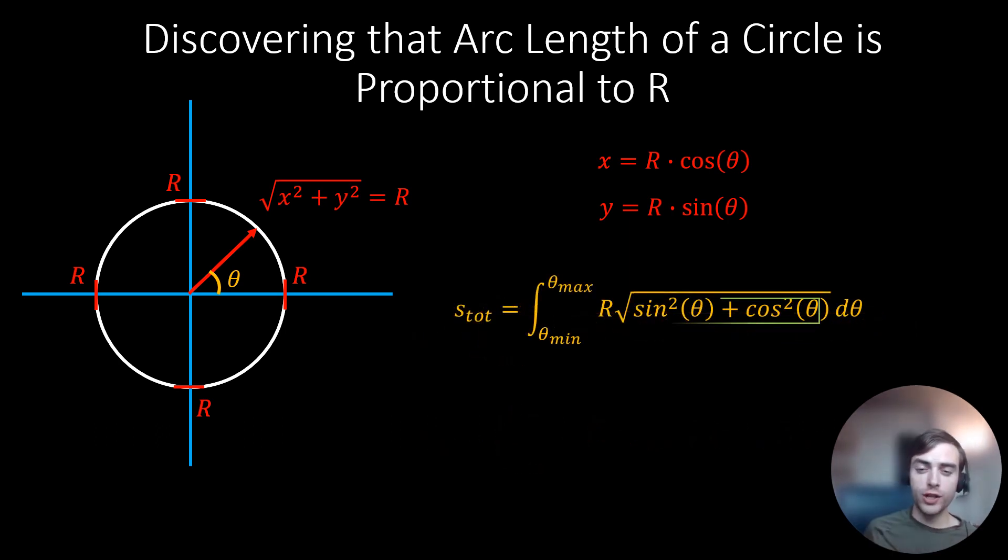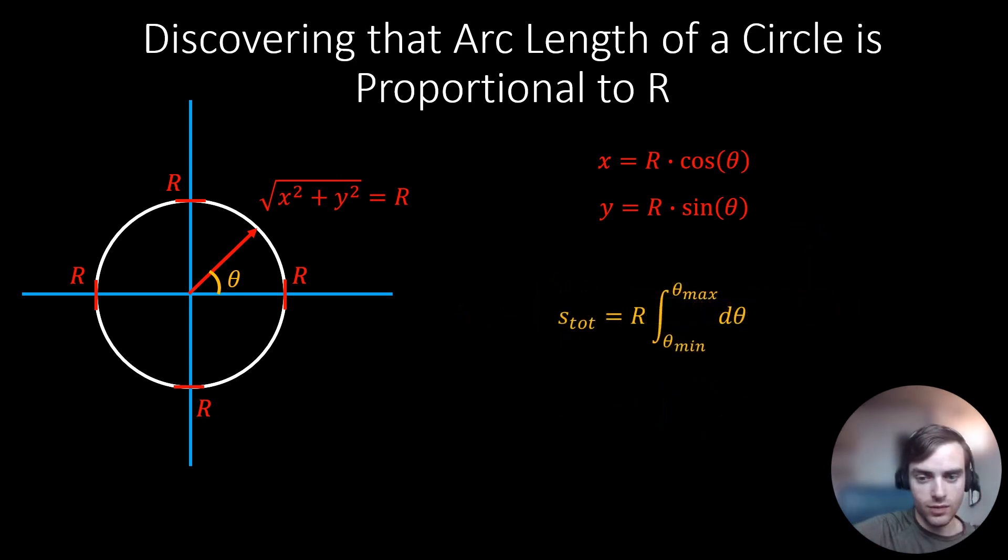And then if we use the trigonometric identity that states that sine squared of theta plus cosine squared of theta is equal to 1, then we obtain the equation s_tot is equal to r times the integral from theta_min to theta_max of a differential in theta. And then we expand the integral.